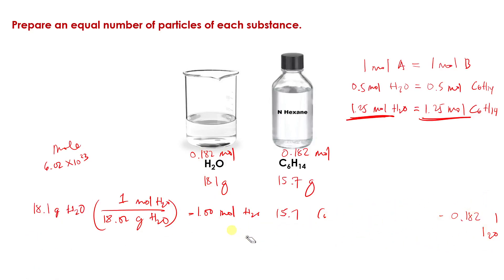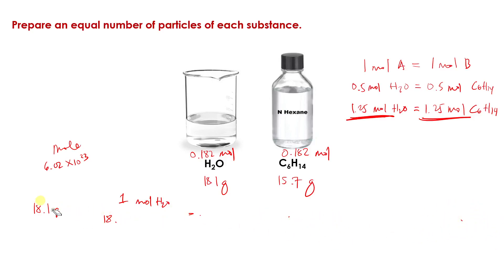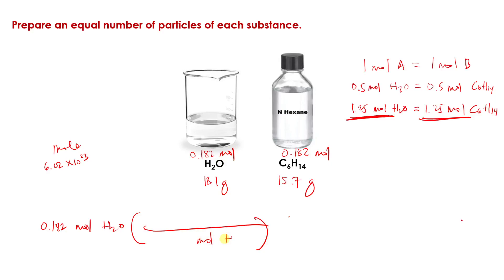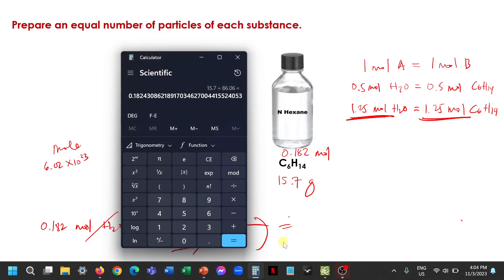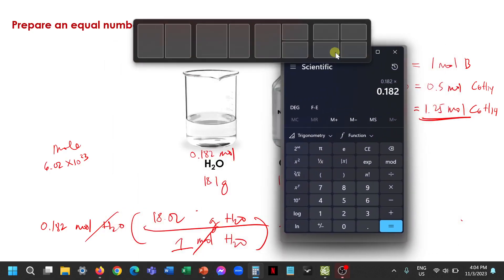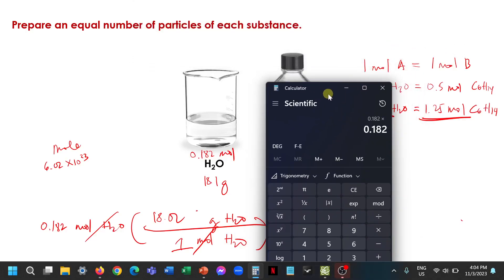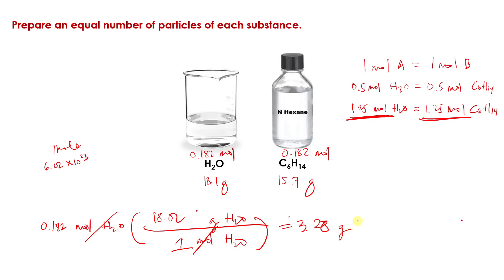Let's proceed and calculate that. We have 0.182 moles of H₂O, and we need to get the mass of this number of moles of H₂O — converting from moles of H₂O to grams of H₂O. One mole of H₂O is equal to 18.02 grams, so we have 0.182 times 18.02, which gives us 3.28 grams of H₂O.